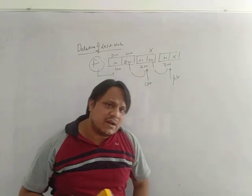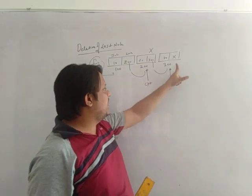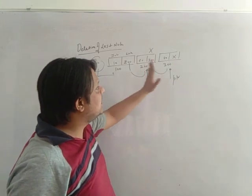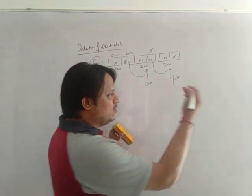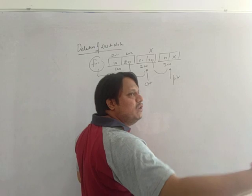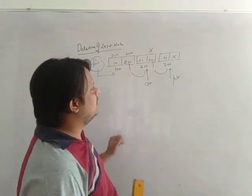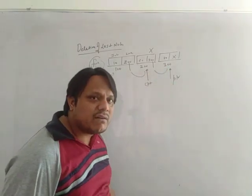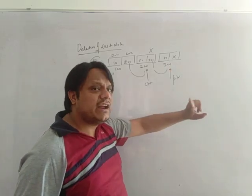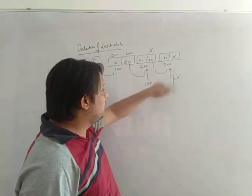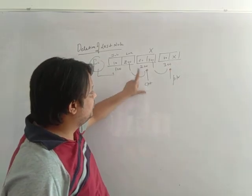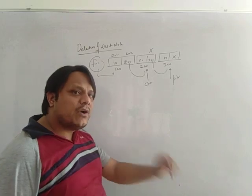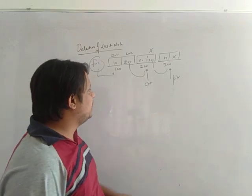Two addresses are required: 300 and 200. Since it's a singly linked list, traversal is only forward — from 300 you cannot get 200. Therefore we require one more pointer which should point to address 200. So two pointers are required in this case.